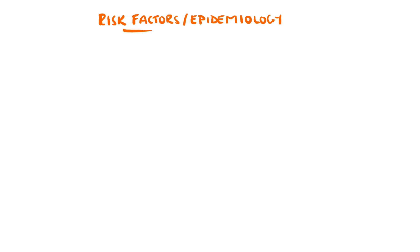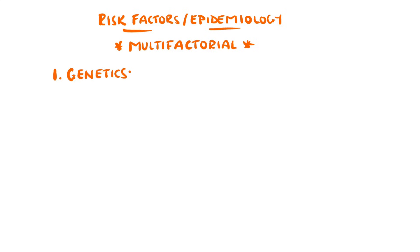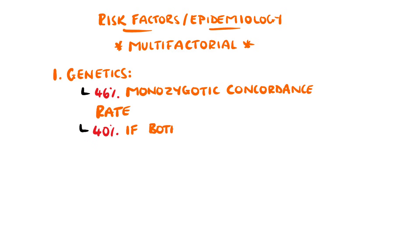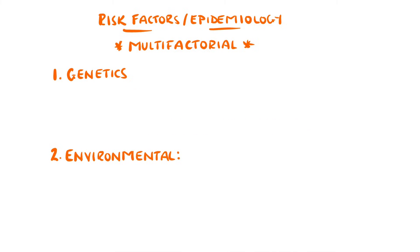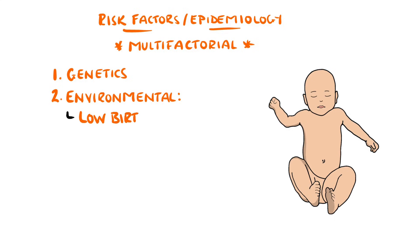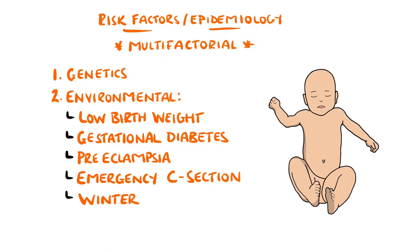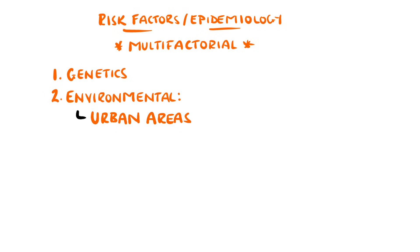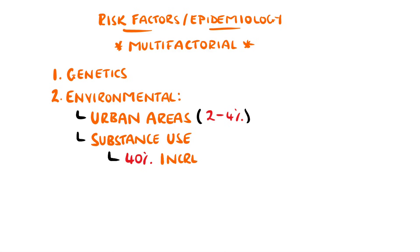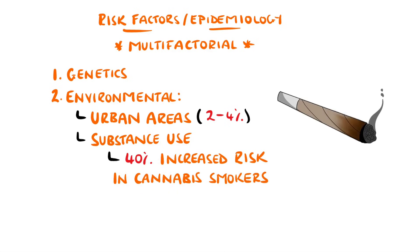Genetics are thought to play a role, with 46% concordance rates documented in monozygotic twins, and a 40% chance of developing the condition if both parents are affected. Environmental factors include several points relating to birth, such as low birth weight, gestational diabetes, preeclampsia, emergency cesarean section delivery, and even winter birthing, associated with a 10% higher risk. The risk is also higher in patients living in urban areas by around 2–4%, and there is a suggestion of a 40% increase in risk in cannabis smokers.